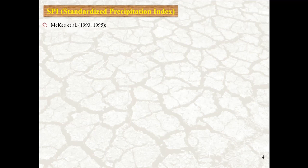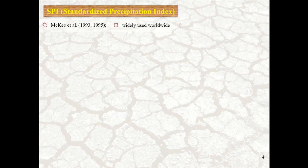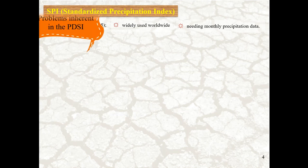If you want to know more about SPI, the Standardized Precipitation Index, Thomas B. McKay and his colleagues at Colorado State University defined this index. This Standardized Precipitation Index is widely used worldwide in drought analysis, and it is known as the most straightforward index that needs only precipitation data.